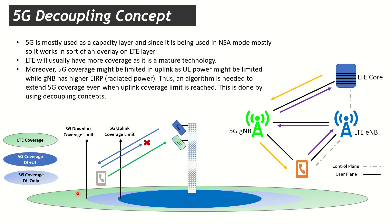This works by utilizing the NSA architecture's dual connectivity between 5G and LTE. We use the 5G connection for downlink and the LTE connection — which is more robust due to its much bigger coverage — for uplink. This way we can maintain the 5G connection for much longer. Once the UE moves out of even the extended coverage area, both downlink and uplink shift back to LTE.